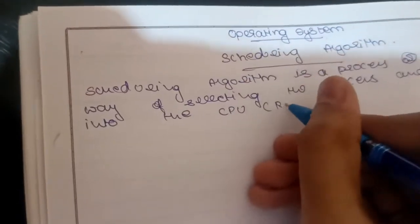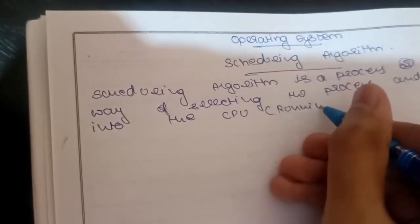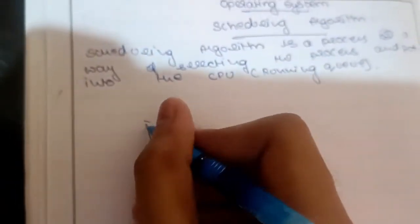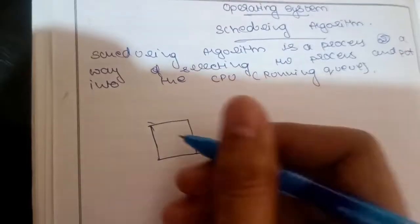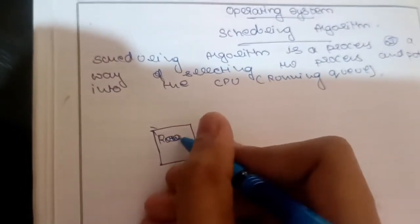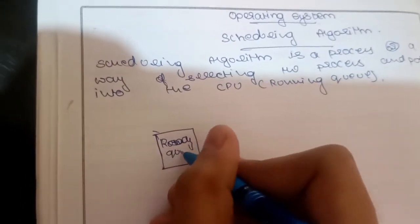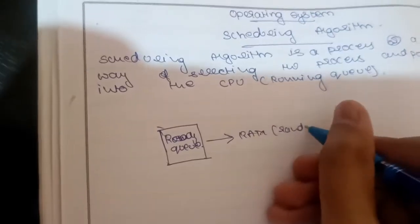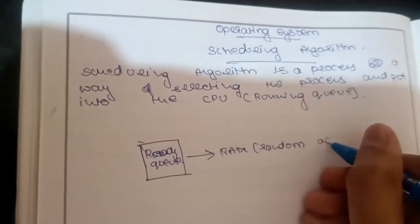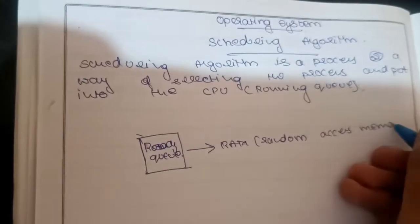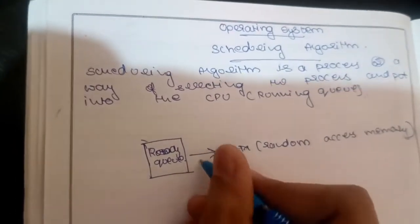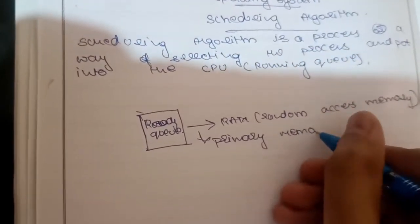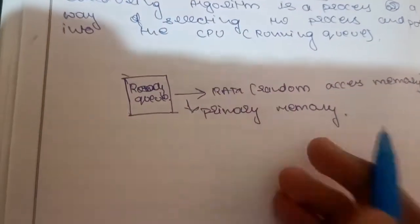We will see about the rest of the topics and discuss numericals in the next session. So what is the scheduling algorithm and what is its work? For example, consider the ready queue — multiple processes are available. This is the concept of multiprogramming. The processes are all in the ready queue, which is essentially RAM — primary memory — random access memory.